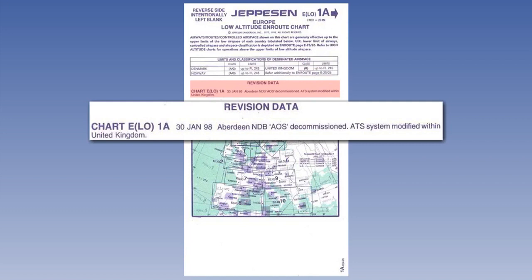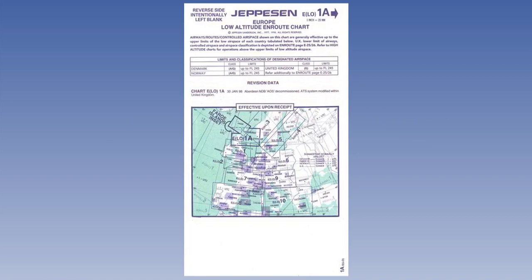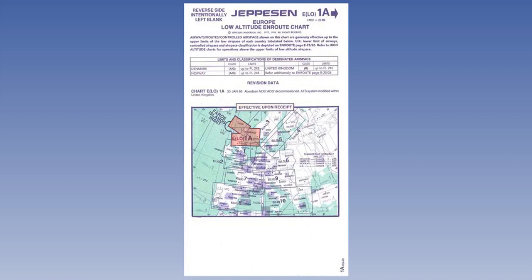Revisions are always made on a Friday. Arguably, the most important part of the front cover is the date on which the chart becomes effective. In this case, the chart became effective immediately upon receipt, but it may have been at a later date, in which case this date will be shown in this panel. Finally, the large box shows in diagrammatical form the area of coverage of this chart and adjacent charts.